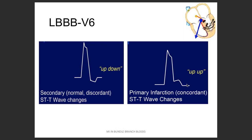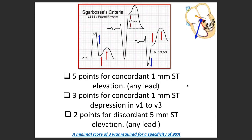Now coming to V6. Whenever we are trying to comment about bundle branch blocks, the important thing is to not just look in V1, but also have a look in V6. In V6, same thing — it is up and down, so up and down will be discordance. And the second example is up-up — so up-up means concordance.